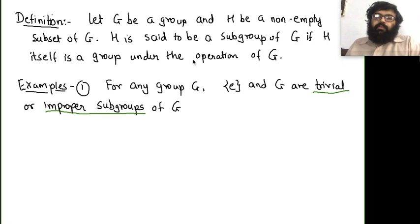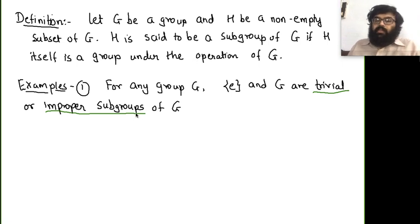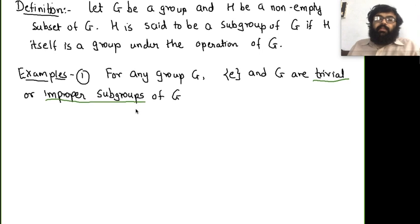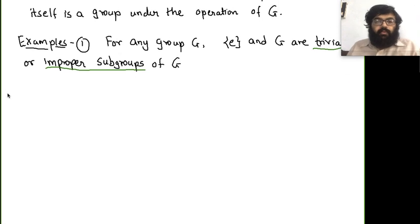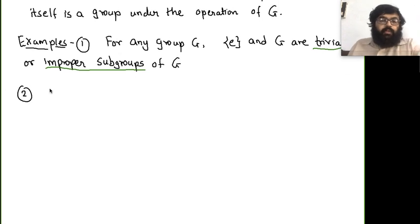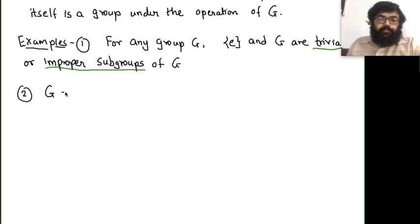They are called trivial or improper subgroups of G. This is the first simplest example — for any group we have two subgroups, but they are not interesting because we know they are groups anyway. So what is interesting is some non-trivial examples.